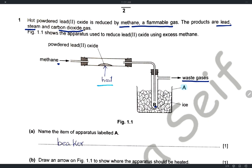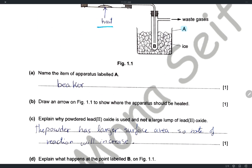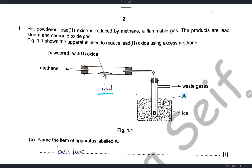Number one: name the item labeled A. Of course, A is a beaker. Draw an arrow to show where the apparatus should be heated. Since we have hot powdered lead oxide, we should heat the lead oxide — we draw an arrow below the lead oxide to represent heat.